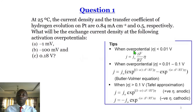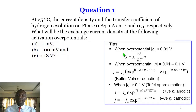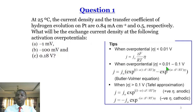Tips: when the absolute value of the overpotential is less than 0.01 volt, the low overpotential limit of the Butler-Volmer equation applies. When the absolute value of the overpotential ranges from 0.01 to 0.1, then the complete form of the Butler-Volmer equation applies.